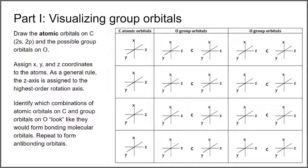We're going to start by getting an intuitive picture and imagining what orbitals might be available on carbon and oxygen in order to form bonds. We'll start with the atomic orbitals on carbon, thinking about the valence orbitals that might be available for bonding — in this case, the 2s and 2p orbitals.